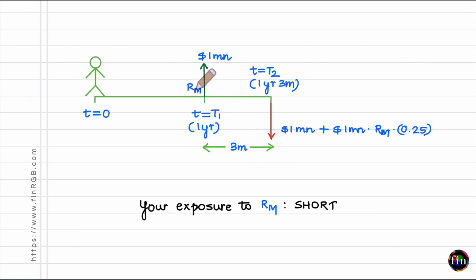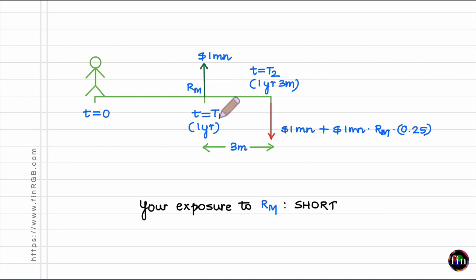If this interest rate is R_M, denoting the market rate, then my interest should be equal to principal 1 million times R_M times the period of 0.25 years. As of today, t equal to 0, I don't really know what R_M will be. R_M is a fair market rate fixed only when we arrive at T1. This means I have an exposure to the random variable R_M, and this exposure is a short exposure — because if R_M goes up, my interest cost goes up and I stand to lose.